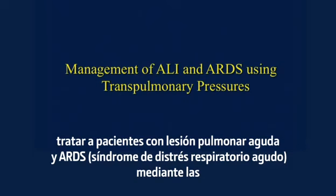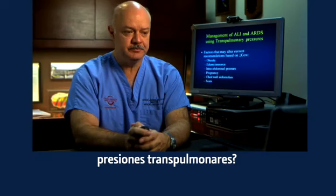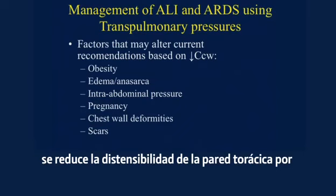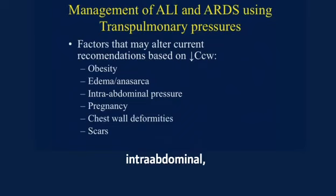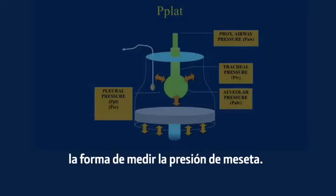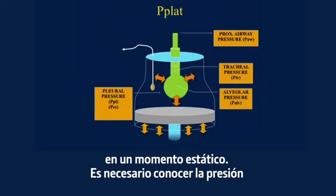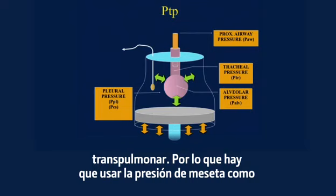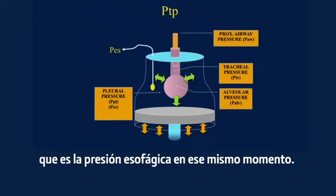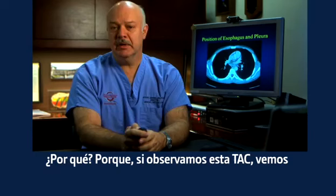So how do we measure transpulmonary pressure and manage the acute lung injury and ARDS patient using transpulmonary pressures? We need to take into account that the plateau pressure is measuring only one side of the equation. When you have decreased chest wall compliance caused by obesity, edema in anasarcic patients, changes in intra-abdominal pressure after surgery, after septic resuscitations, with pregnancy, chest wall deformities, or burns, there are significant changes in the chest wall that affect how you measure your plateau pressure. The plateau pressure measures only the airway pressure at a static moment. We need to know the transpulmonary pressure, and the best way to measure it is by measuring the esophageal pressure simultaneously, which will give us the transpulmonary pressure.